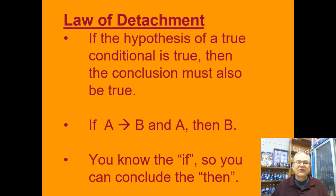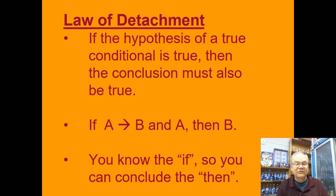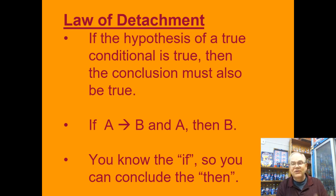The first of these is what's called the law of detachment. It looks way more complicated than it is. It says: if the hypothesis of a true conditional is true, then the conclusion must also be true. So if A implies B is true and you also know A, then you can conclude B. The easiest way to think about the law of detachment is: if you know the 'if' part, the 'then' part has to happen as well — you know the 'if' part, therefore the 'then' part.